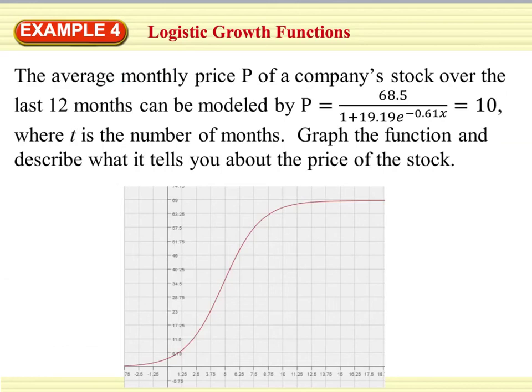When we're dealing with real-life scenarios, logistic growth functions are often more useful to use when we're modeling something than an exponential growth function because the logistic growth model will actually account for constraints that are placed on growth because not everything will grow 100% exponentially, as we talked about before, something like population. So when we use logistic growth functions, it's just kind of a more accurate picture of what we're getting in a real-life scenario. So when we look at example 4, it says that the average monthly price P of a company's stock over the last 12 months can be modeled by P equals 68.5 divided by 1 plus 19.9 e to the negative 0.61x. And I apologize that equals 10 should not have been there, so please don't write that in.